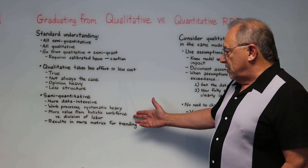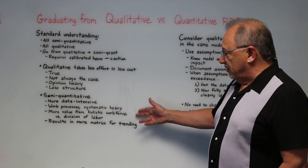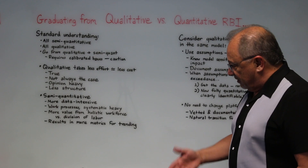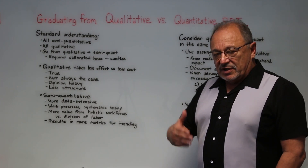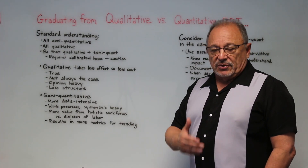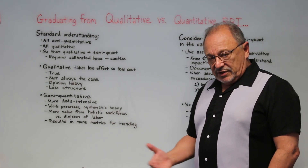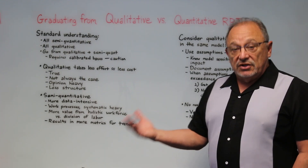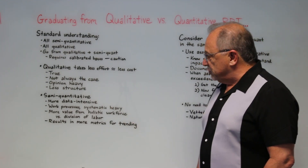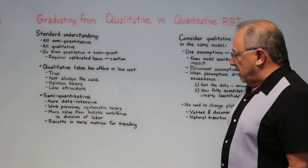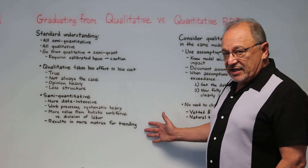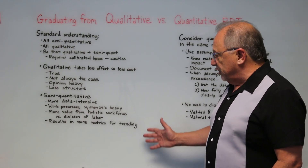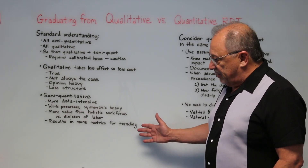There are typically more systematic work processes involved, as there should be in semi-quantitative or more quantitative studies. There's also a division of labor within these approaches — you have people coming in from operations, a fixed equipment reliability engineer, process engineers, and inspection and corrosion materials specialists. The more quantitative studies provide metrics that you can use for more trending and benchmarking.